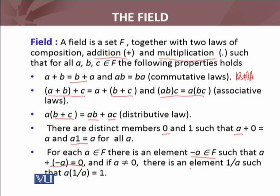Similarly, for each non-zero A of F, there must be some element of field, one over A in F, such that when you multiply A and one over A, the answer is the multiplicative identity. If any set on which we define addition and multiplication satisfies these properties, we will say that this is a field.